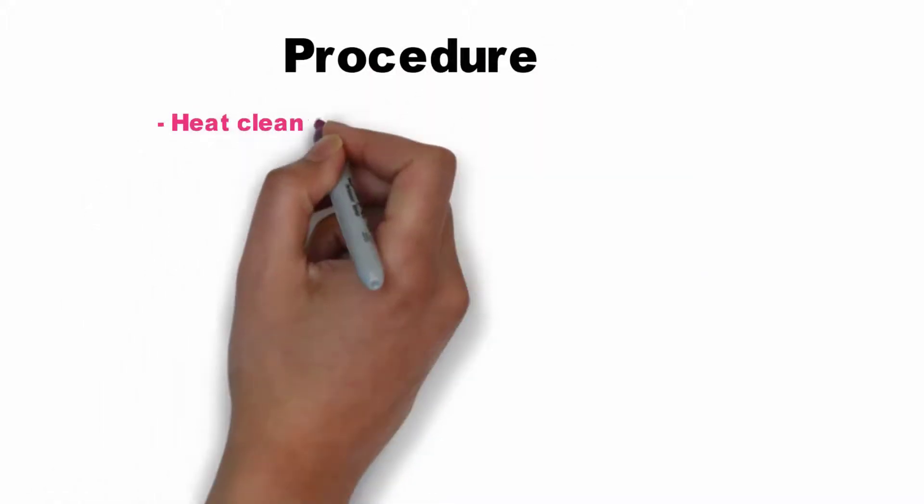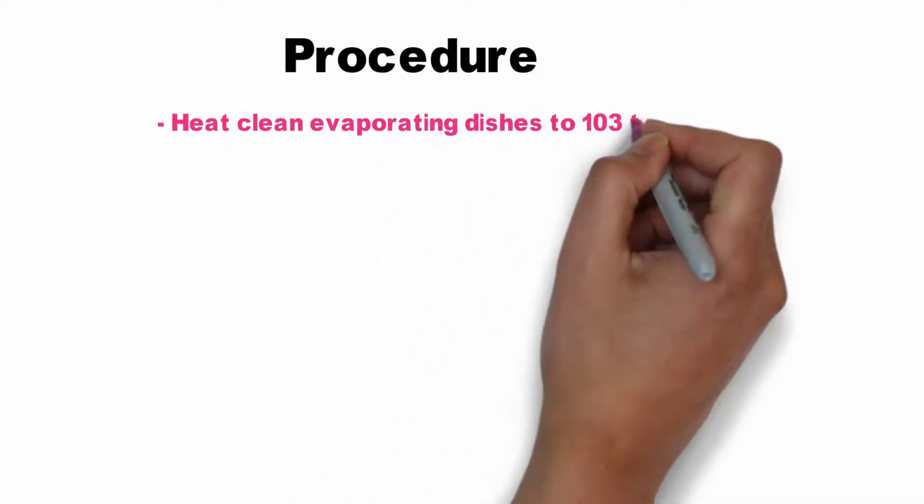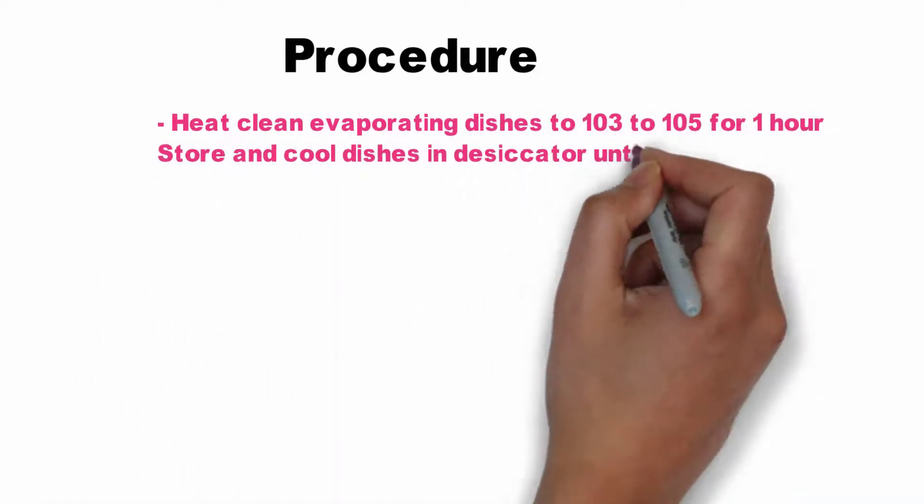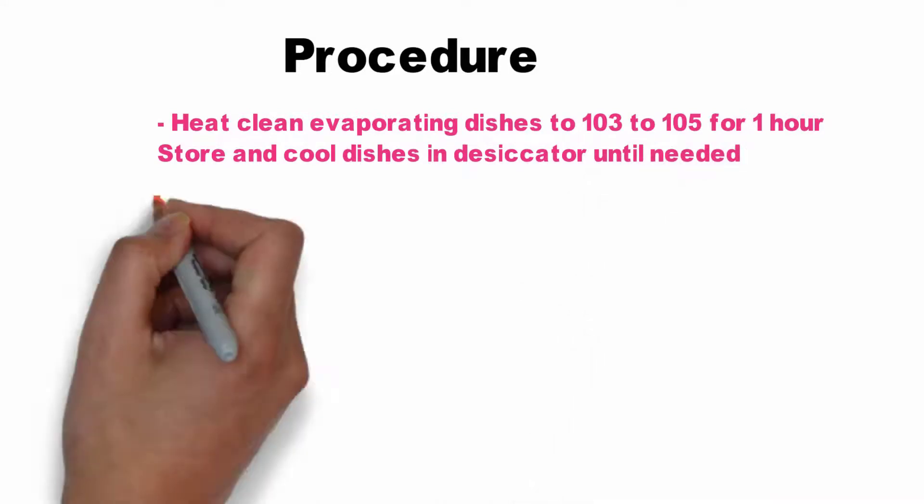Now to the procedure: Heat clean evaporating dishes to 103 to 105 degrees for one hour. Store and cool dishes in a desiccator until it is needed.